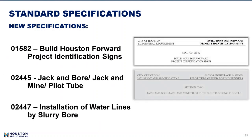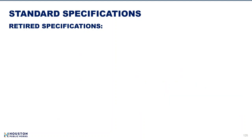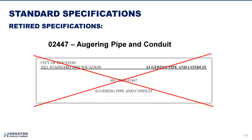Specification 1582, Build Houston Forward Project Identification Signs, is provided with a new standard detail — highlights will be presented later. Specifications 2445 and 2447 are provided due to the latest changes in boring methods industry. Marcus Mengesha will present the highlights for these specifications after my presentation. Regarding retired specifications: new requirements for boring methods led to two new specs, and one of these replaced the existing outdated specification 2447, previously called Auguring Pipe and Conduit.